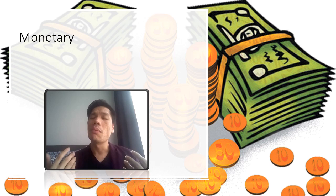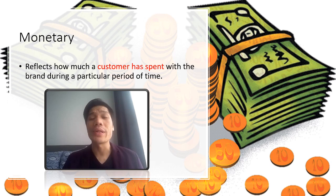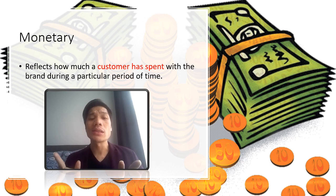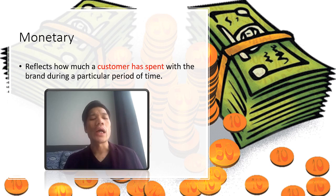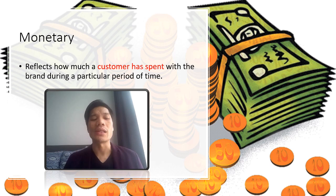Next, we're going to look at monetary. Monetary, also called monetary value, reflects how much the customer has spent with the brand during a particular period of time. Big spenders should be treated differently than customers who spend little — we want them as our gold customers. Monetary divided by frequency indicates the average purchase amount, an important factor when segmenting these customers.